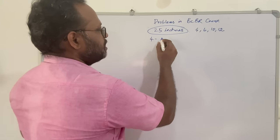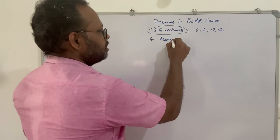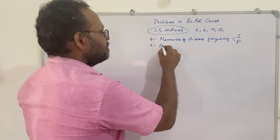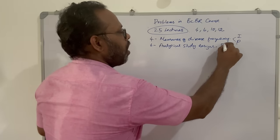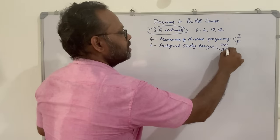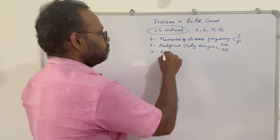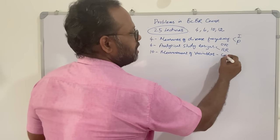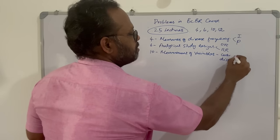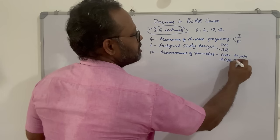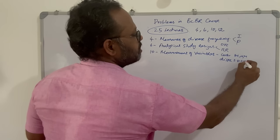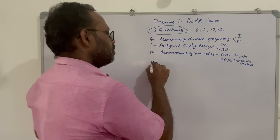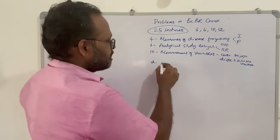The 4th lecture is Measures of Disease Frequency, where we will focus on incidence and prevalence. The 6th lecture is Analytical Study Designs, where we focus on odds ratio and relative risk. The 10th chapter is Measurement of Study Variables, where we deal with measures of central tendency — mean, median, mode — and measures of dispersion: standard deviation, coefficient of variation, mean deviation, variance. And in the 12th lecture, we deal with sample size calculation.